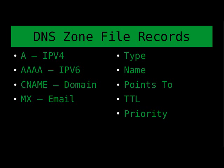TTL — time to live — is how many seconds from the time a record is first pulled from the authoritative server before it is supposed to expire. Having a very high TTL number means it takes longer to change those records and propagate them all throughout the internet, but it also reduces your bandwidth because not as many requests have to be made since records take longer to expire.